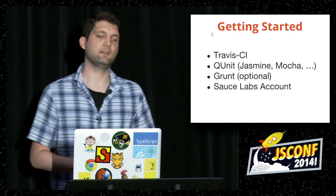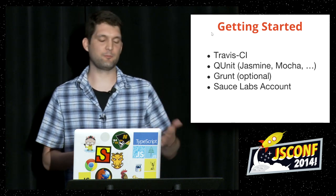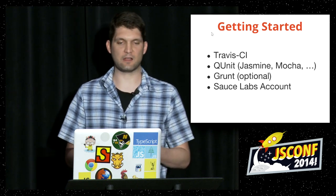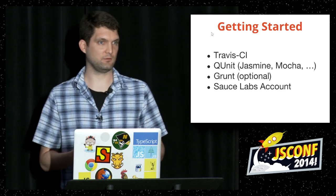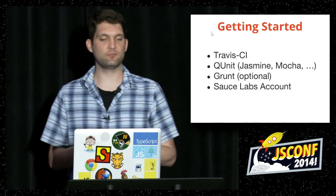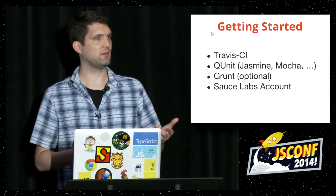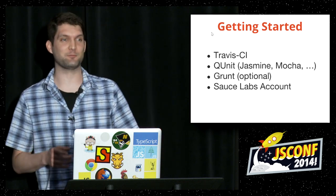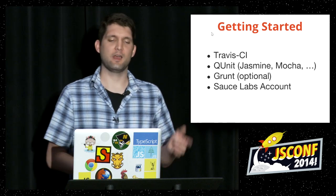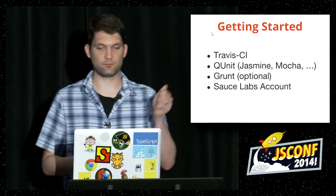To get started, I used Travis CI and QUnit. Sauce Labs supports Jasmine, Mocha, and a few others, as well as custom unit testing libraries. I don't use Grunt, but it is optional — and I'll talk about the Grunt approach too. You'll also need a Sauce Labs account: you sign up, get your account, get an API key, and that's what you'll need.